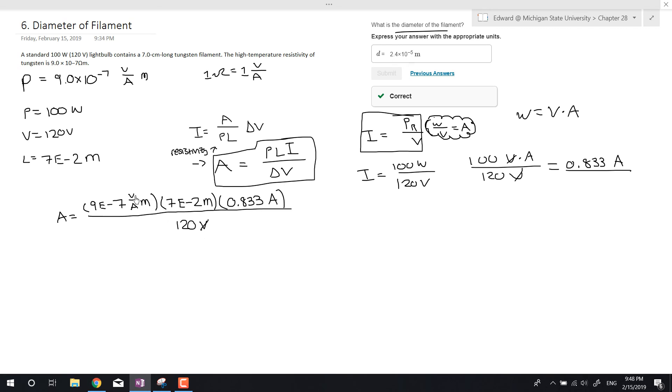So the volts cancel, the amps cancel, and we're left with meter, meter, which is meter squared, which is perfect to get area. So I'm going to go ahead and type this in the calculator. So 9e to negative 7 times 7e to negative 2 times this 0.833 repeating, divided by 120. Well, that gives us a whopping 4.375e to the negative 10 meter squared.